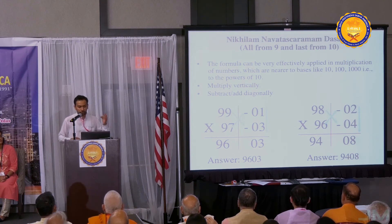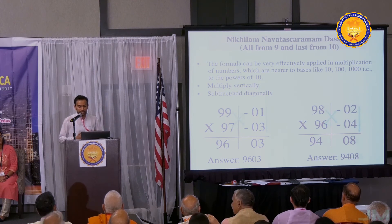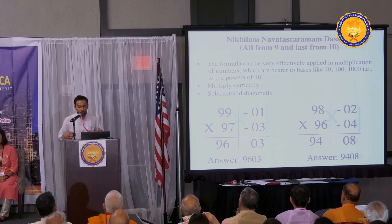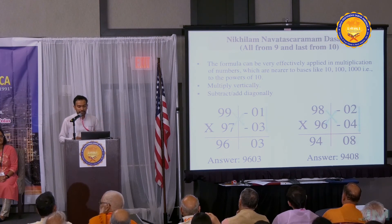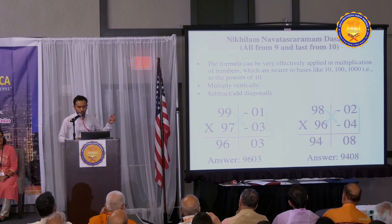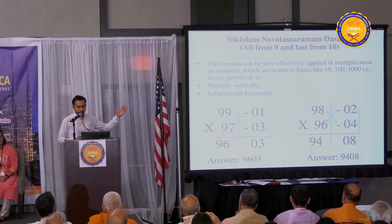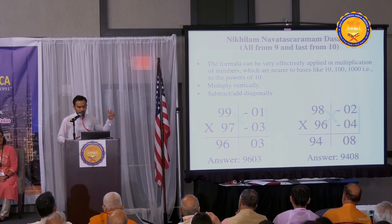What's the first step? 98 is how much less than 100? Two, right? So we're going to put two on your right hand side. 96 is how much less than 100? Four. So you're going to put four on your right side. What is two multiplied by four? Eight. So we're going to put eight down there.